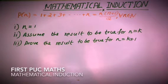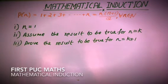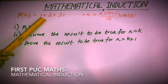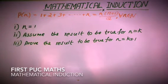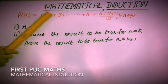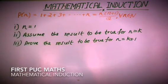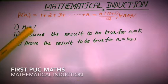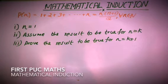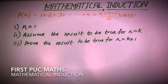As a first step under mathematical induction, we have to assume n equal to 1. If we replace n by 1, only one term will be there in the expansion — that is the first term itself. Note that P of n has n terms in the expansion: 1, 2, 3 up to n. So when n equals 1, there is only one term. Then we have to prove that the result is true for n equal to 1.